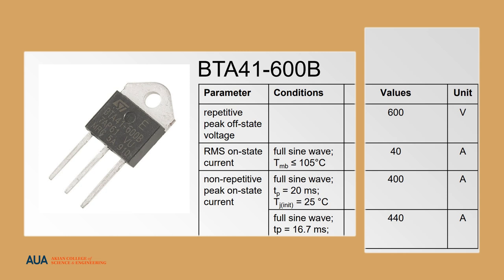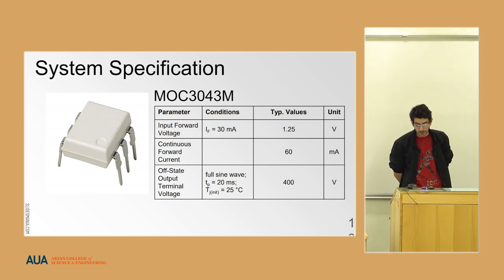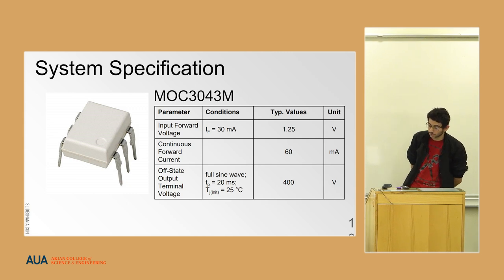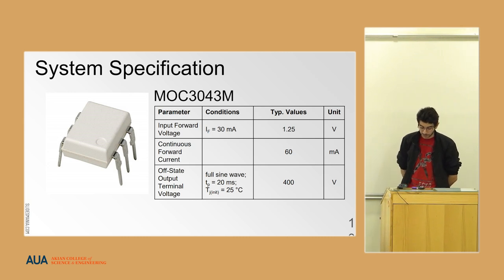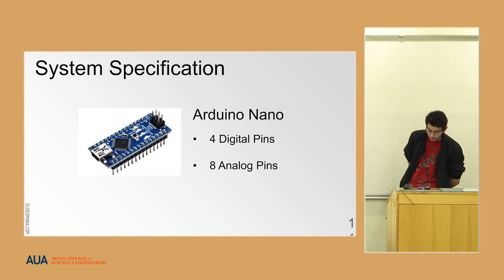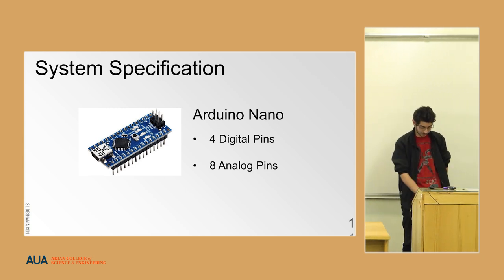I chose the BTA41600 due to its repetitive peak off-state voltage, which can withstand up to 600 volts, and its RMS on-state current of 40 amps, with a quite high non-repetitive peak on-state current. For the MOTS 3D43M, I used it for isolation — it has a low input forward voltage at 30 milliamps forward current, continuous forward current up to 660 milliamps, and off-state output terminal voltage of 400 volts, ideal for our high-voltage part. I used the Arduino Nano because it was cheap, has 14 digital pins and 8 analog pins.